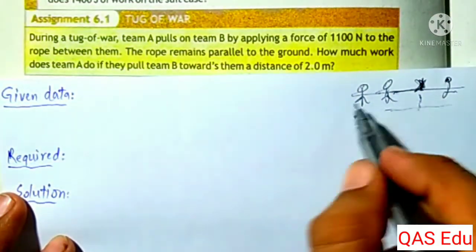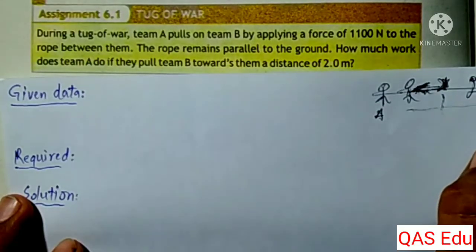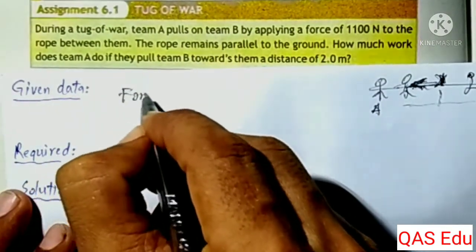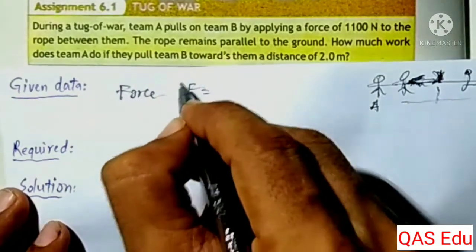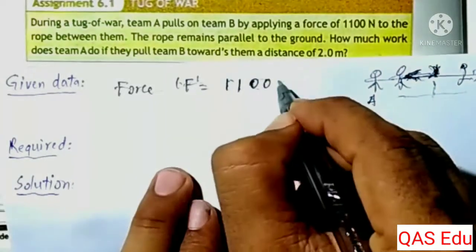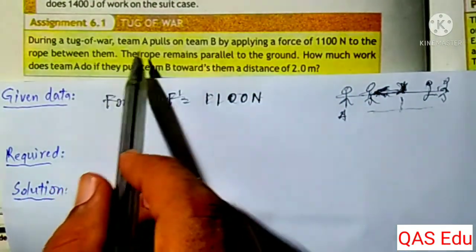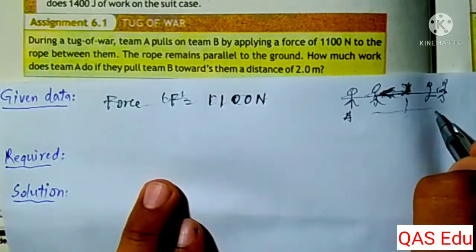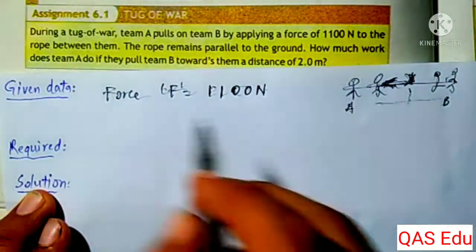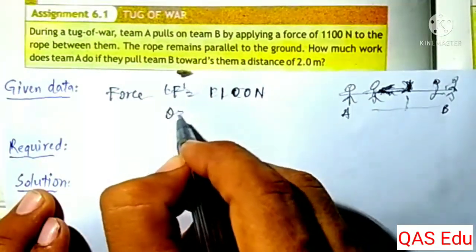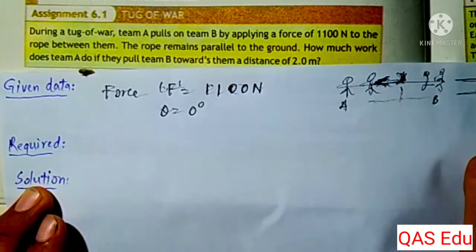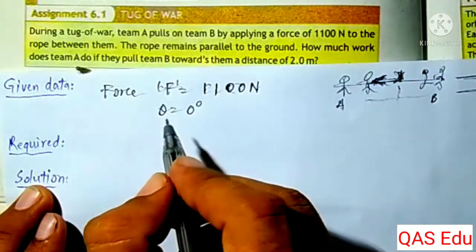Team A pulls on Team B. The force Team B responds with is 1,100 newtons. So the force F is 1,100 newtons. The rope between them remains parallel to the ground, meaning theta is zero degrees — there is no angle.